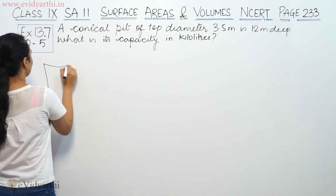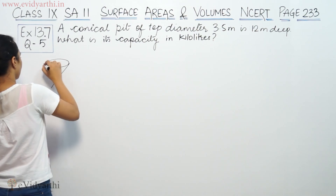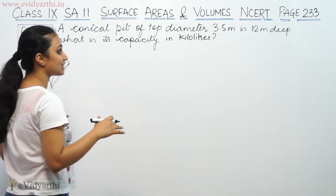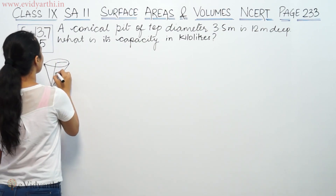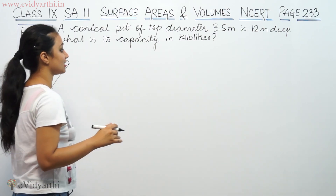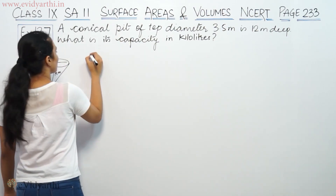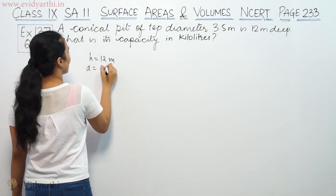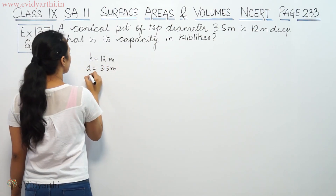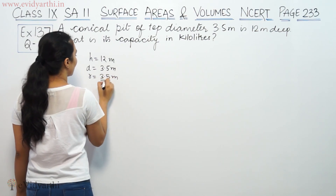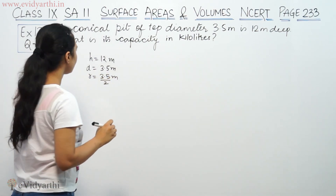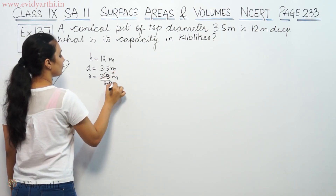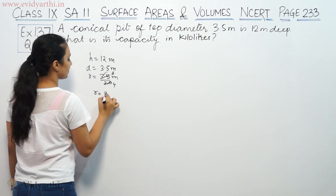So, this conical pit is like this. Its diameter is 3.5 meters, so its radius is equal to 3.5 by 2, which gives us 7 by 4 meters. And the depth is 12 meters. What is its capacity in kilolitres?